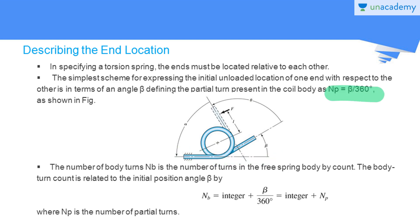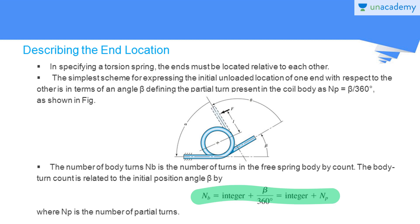The number of partial turns NP present in the coil is given by NP equals beta divided by 360. NP gives us the partial turns, which are the end turns of this helical coil torsion spring. The number of body turns NP is the number of turns in the free spring body by count. The body turn count is related to the initial position angle beta by NP equals integer plus beta divided by 360 degrees. The integer value is obtained by counting the number of turns in the spring, excluding the ends. The ends are included by the term NP, the number of partial turns. Therefore, the total number of body turns is given by NP equals integer plus NP.